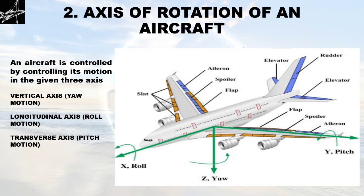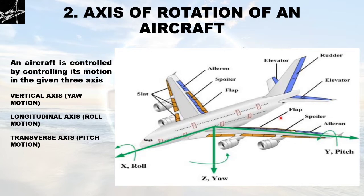Our second elementary part is the axes of rotation of an aircraft. An aircraft is controlled by controlling its motion in three axes. The first axis is the vertical axis — the Z axis — governing the yaw motion. Assume the aircraft is pivoted at this point; the only available motion is turning the nose left or right while the tail moves the opposite way.